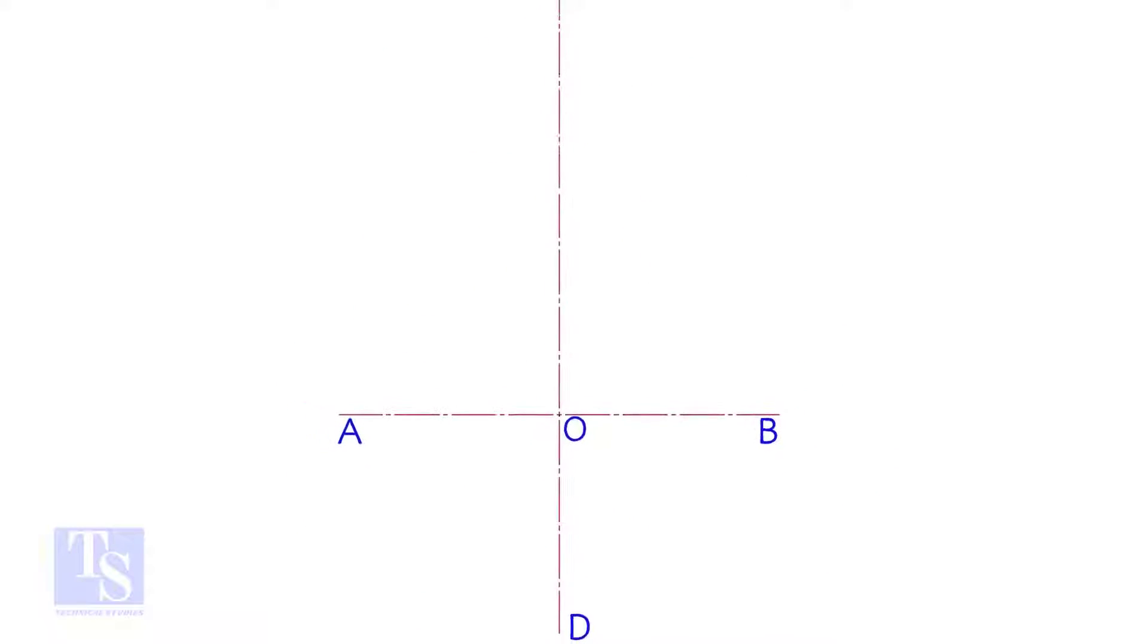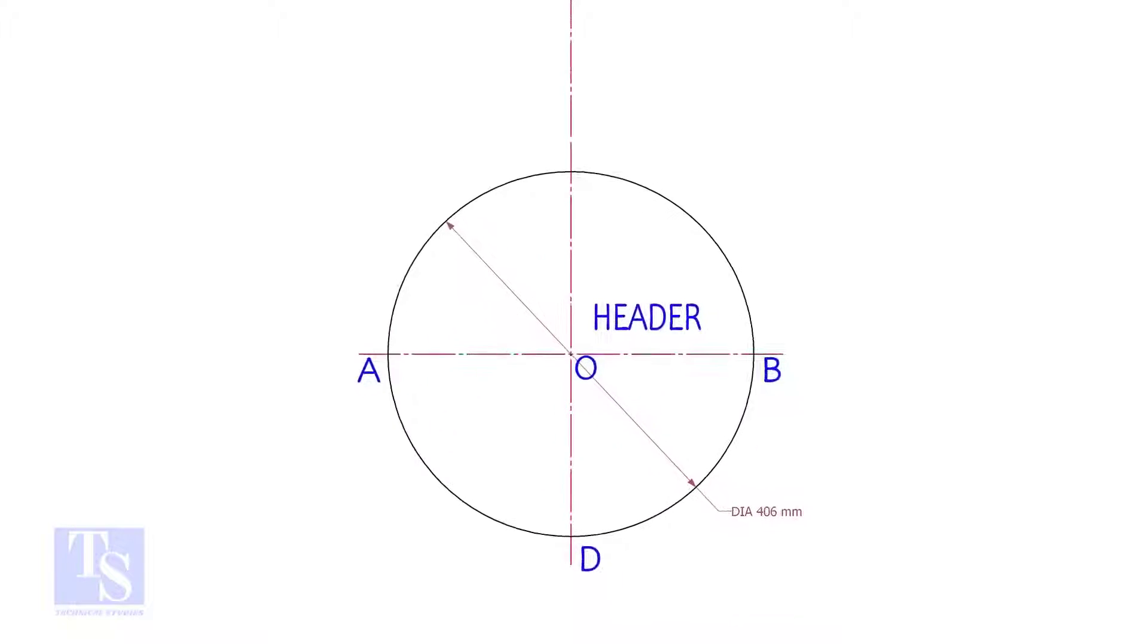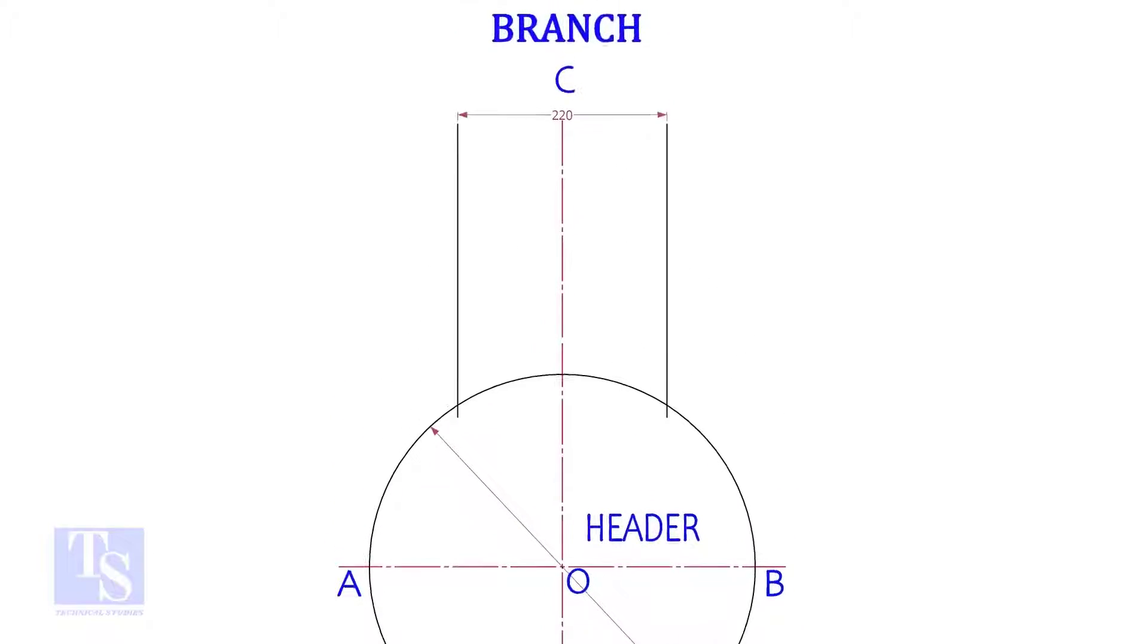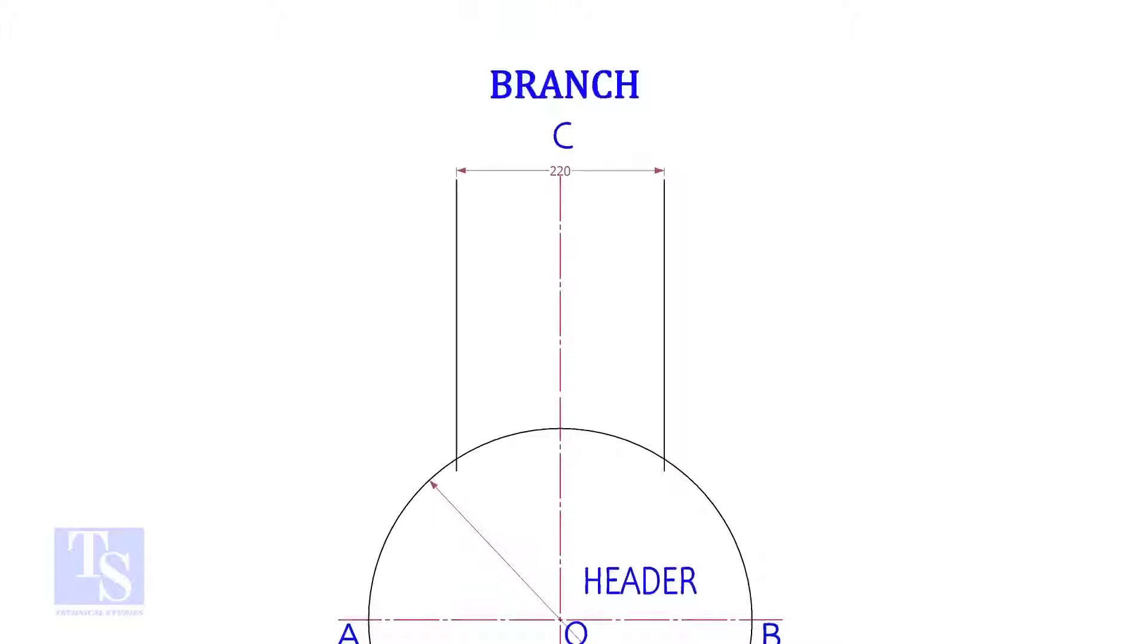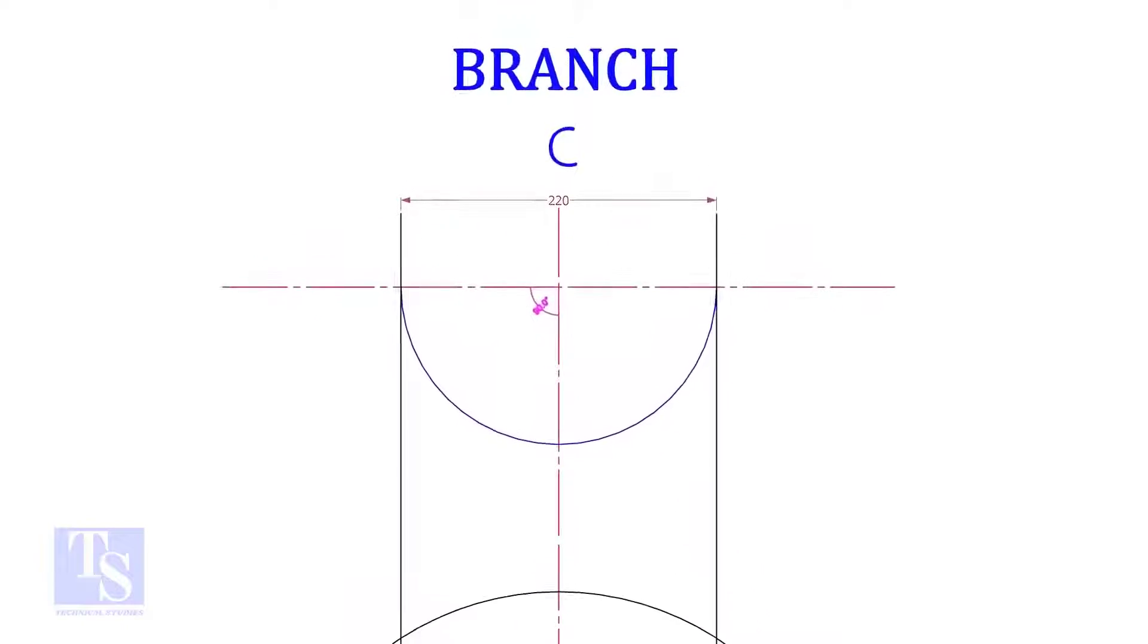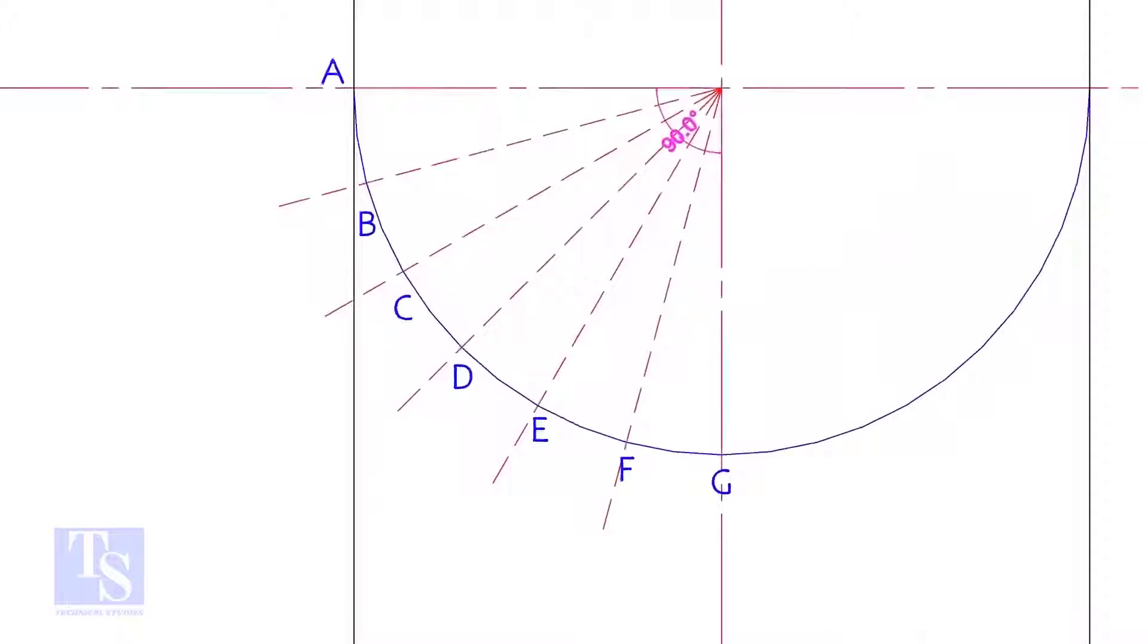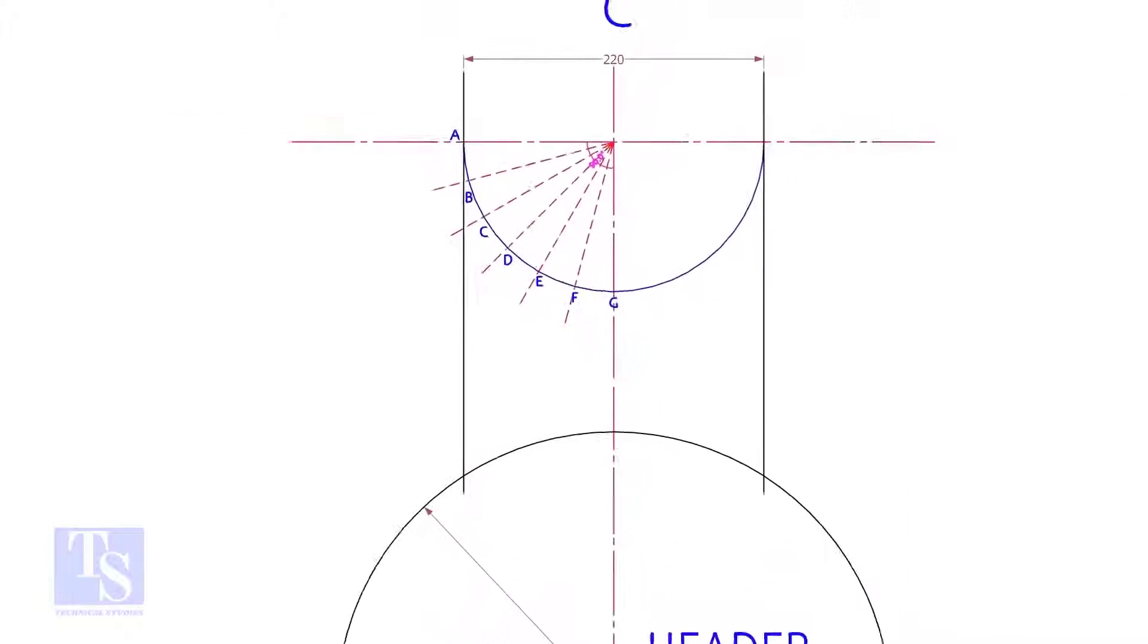Draw lines AB and its perpendicular CD. Draw the header circle OD. Draw the branch OD lines. Draw the half circle of the branch and divide it into any suitable number of parts. Let us divide it into 12 parts.